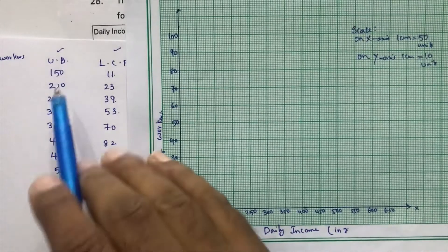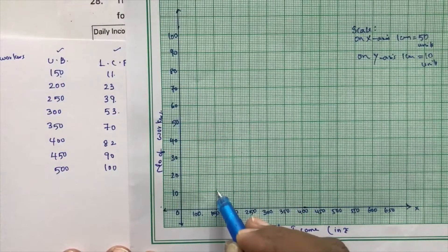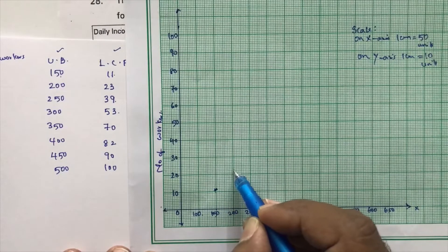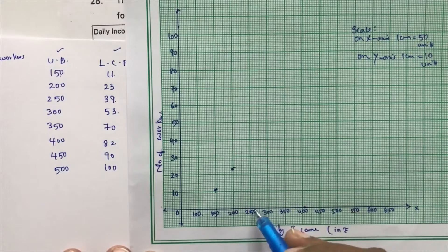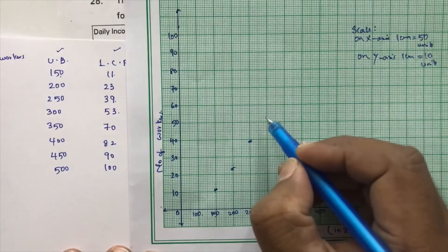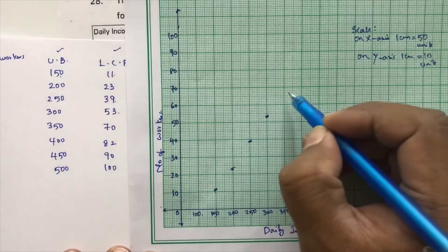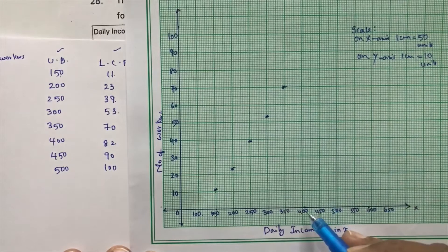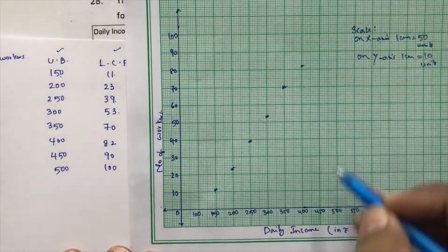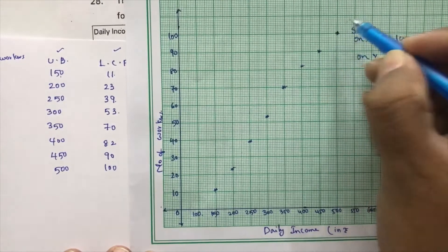Now, plot the values. 150, 11. 150, 11, 10, this one 11. Next, 200, 23. 21, 22, 23. 250, 39. 300, 53. 350, 70. 400, 82. 450, 90. 500, 100.